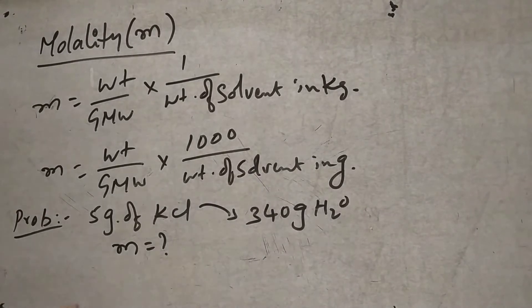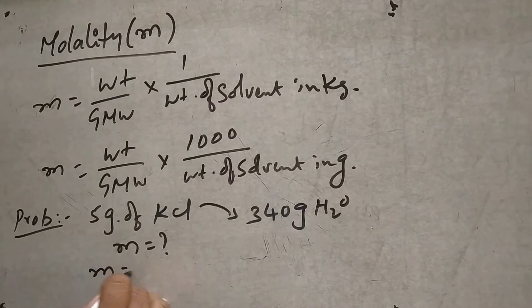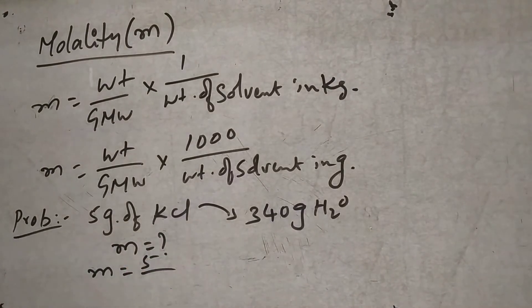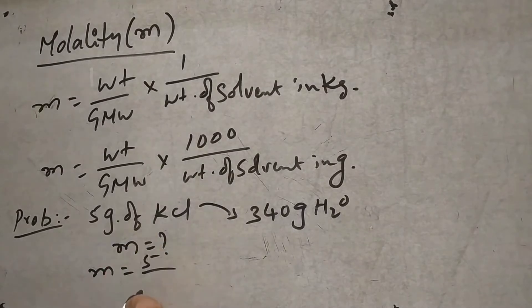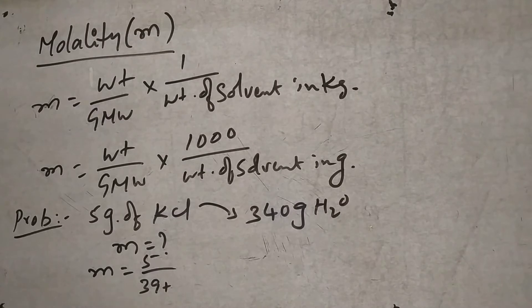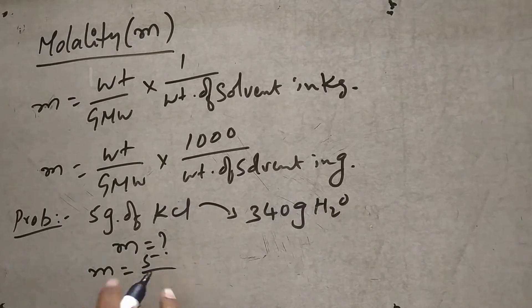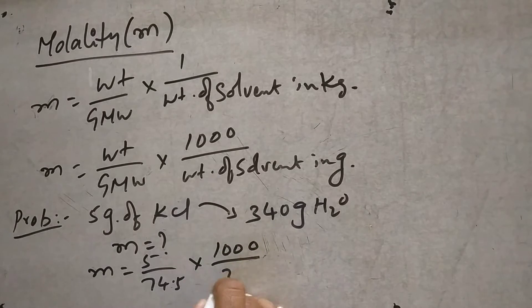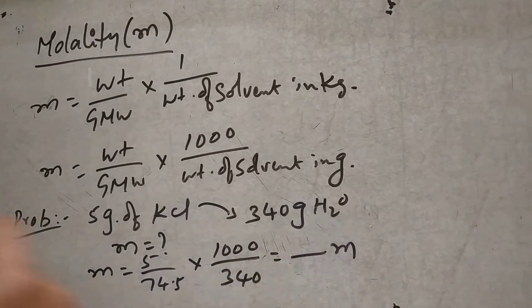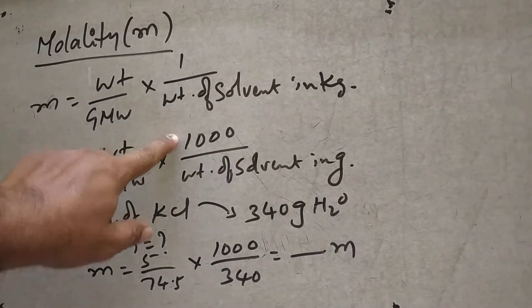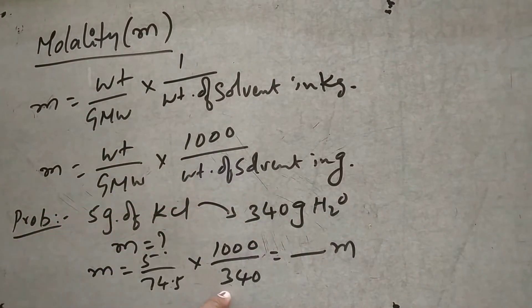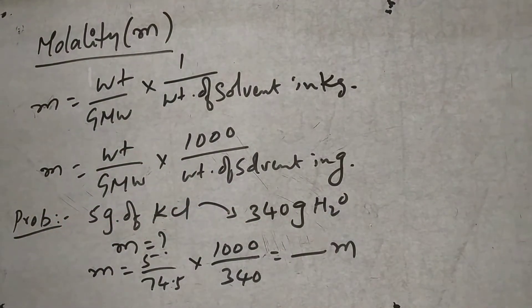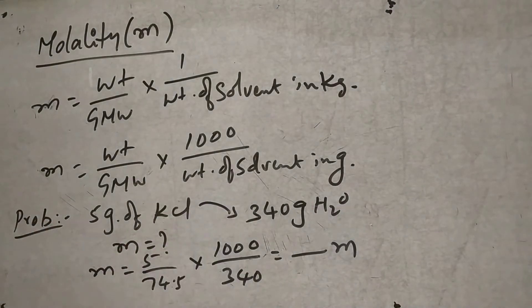So, small m is equal to weight, which is 5 grams, divided by the gram molecular weight of KCl. That is 39 plus 35.5, which equals 74.5. Into 1000 divided by 340.